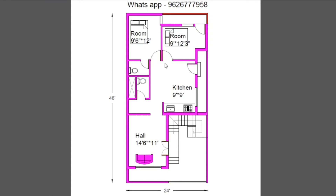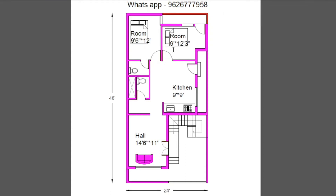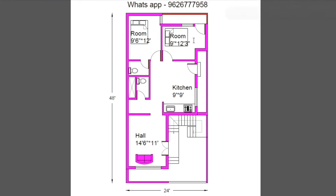Next, second bedroom size is 9 feet by 12 feet 3 inches. One window is placed.